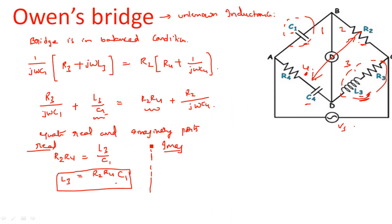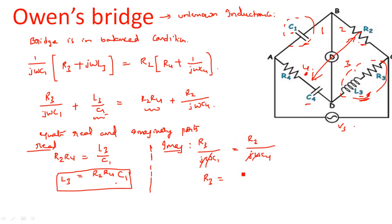Equating the imaginary part: R3/(jωC1) = R2/(jωC4). The jω terms cancel, giving R3 = R2 × C1 / C4. This gives the leakage resistance R3. Unlike Maxwell's bridge, Hay's bridge, or Schering bridge — which calculate different parameters — here we have calculated the unknown inductance L3 and leakage resistance R3.